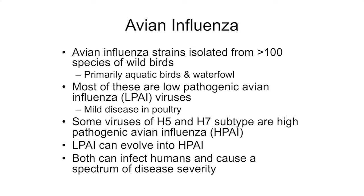Low pathogenic strains can evolve into high pathogenic strains over time, and both types of avian flu can infect humans and cause a spectrum of disease. The designation as low versus high pathogenic is based on what happens to birds, but doesn't necessarily correlate with what would happen in a human if that strain were transmitted to one of us.